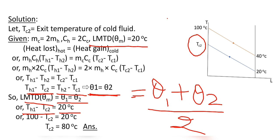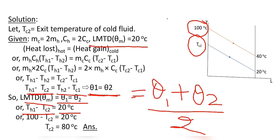Here T_H1 is known — it is 100 degree Celsius. So from the equation 100 − TC2 = 20, we get TC2 = 80 degree Celsius. This is our final answer.